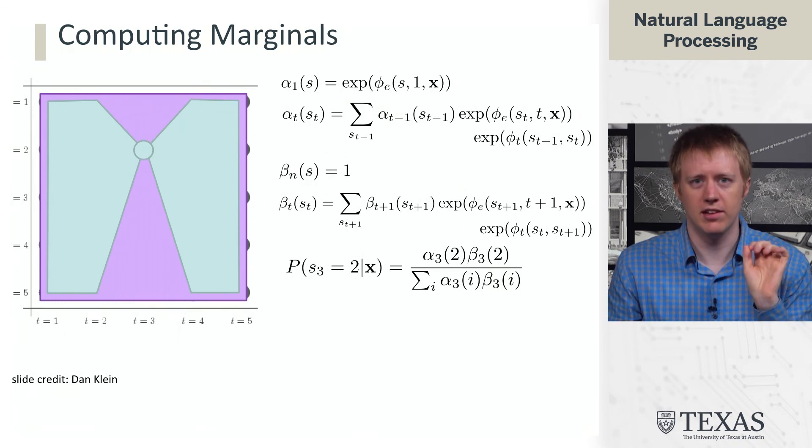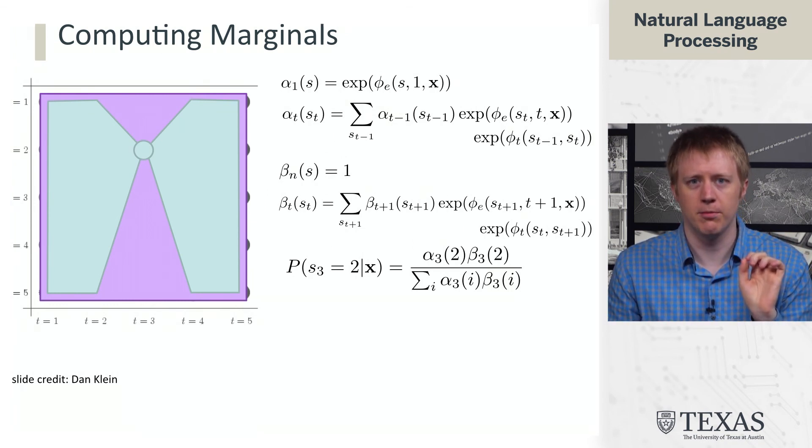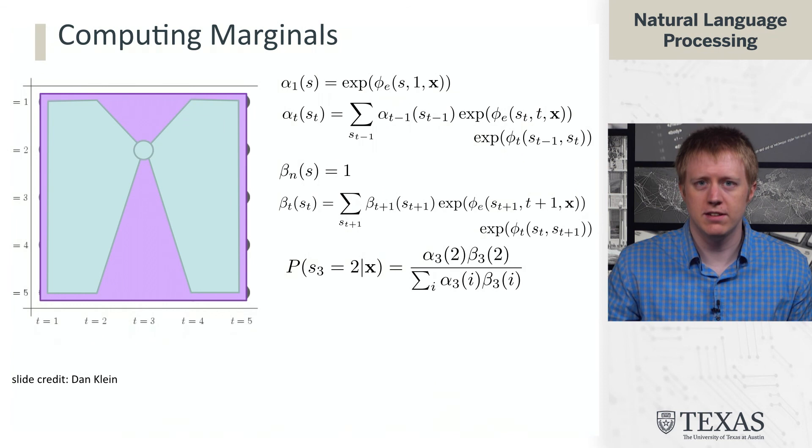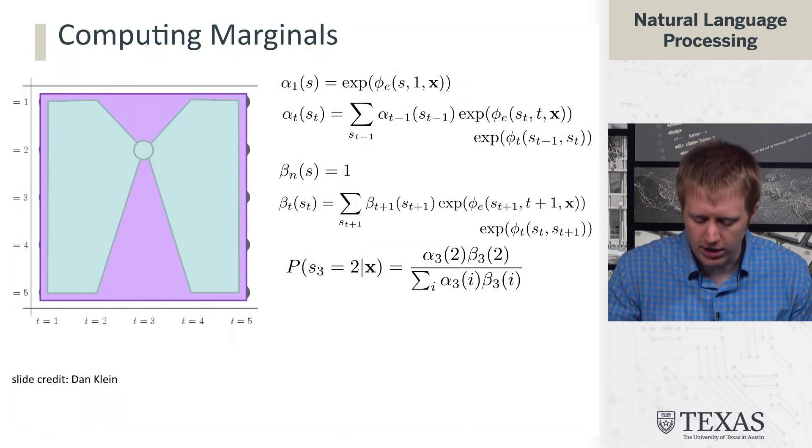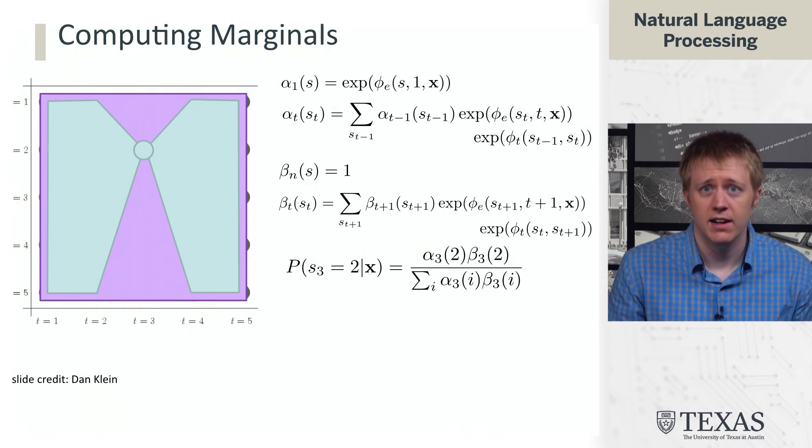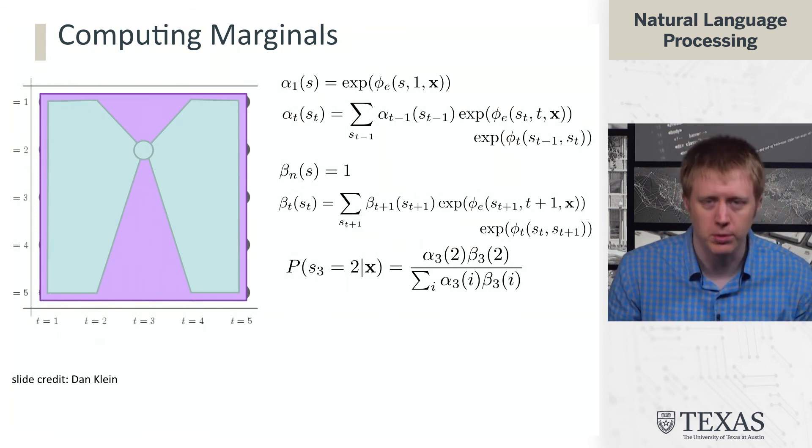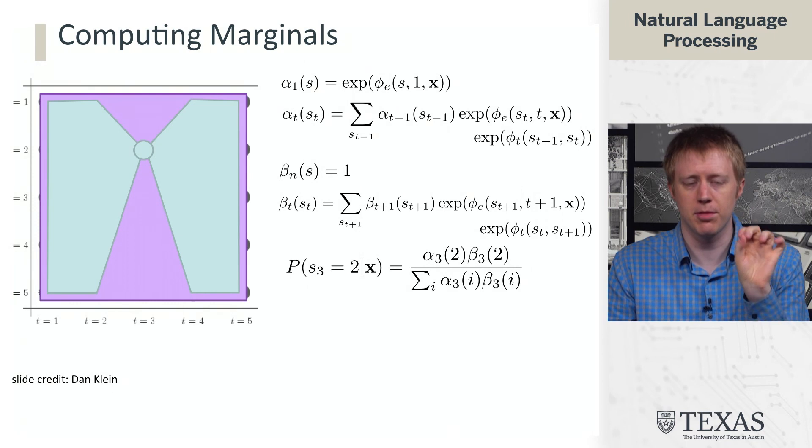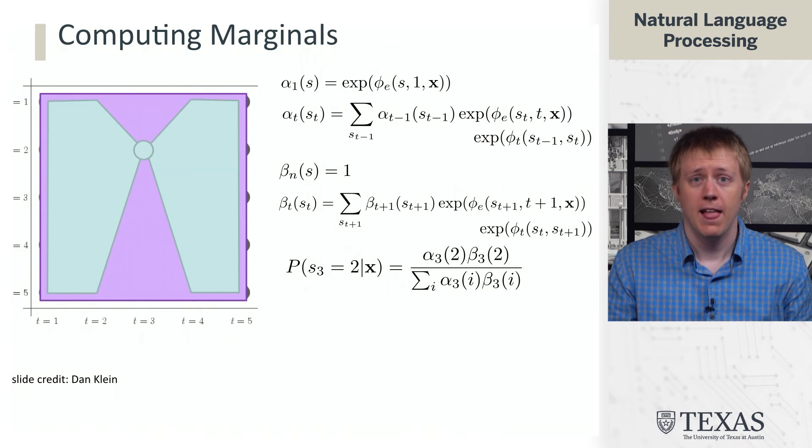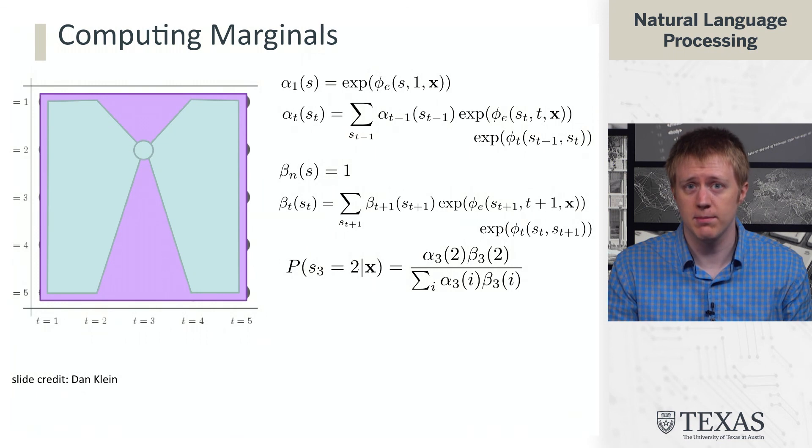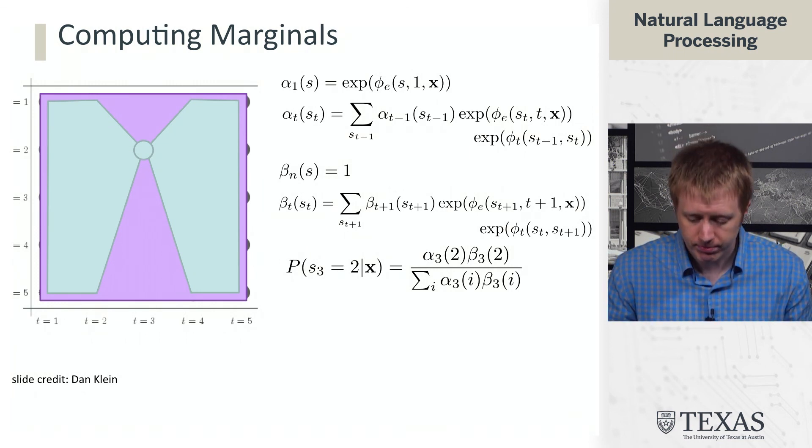Now, for actually computing this probability here, we need to compute it as follows. We take alpha and beta associated with that particular state. So remember, we're thinking of state at time step three, state two. So alpha three of two times beta three of two. And then we divide by the sum over the alphas and betas at that time step, summing out over all of the i's.